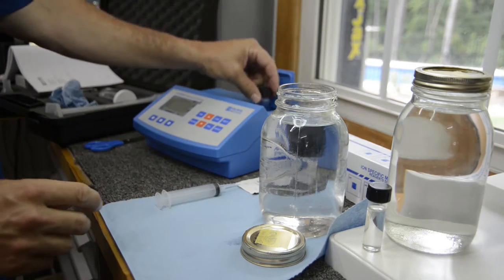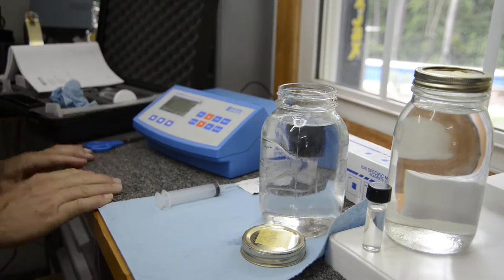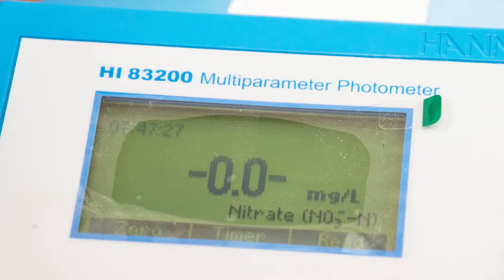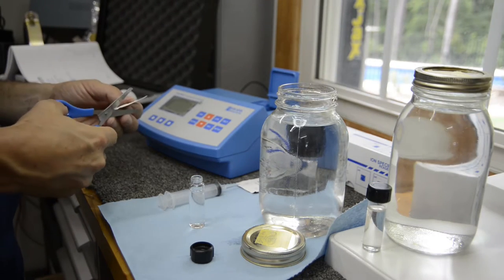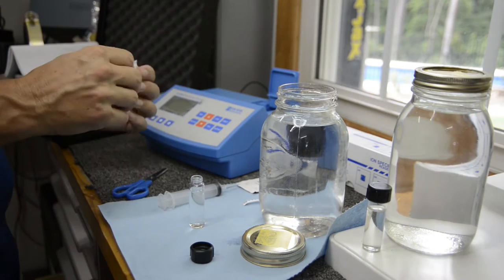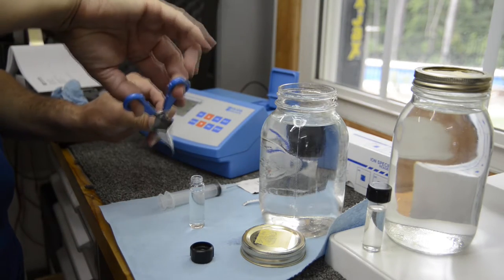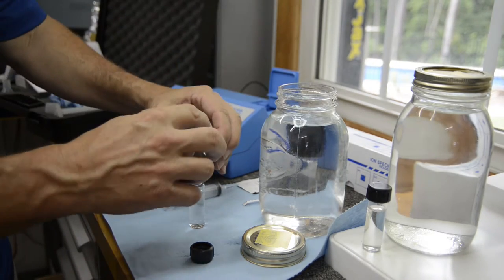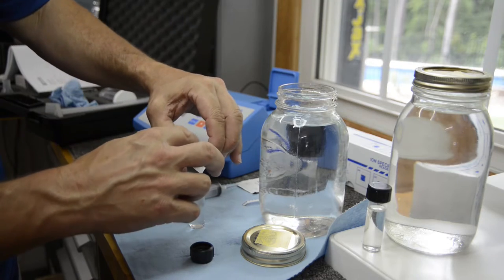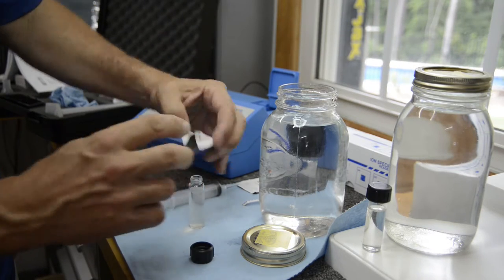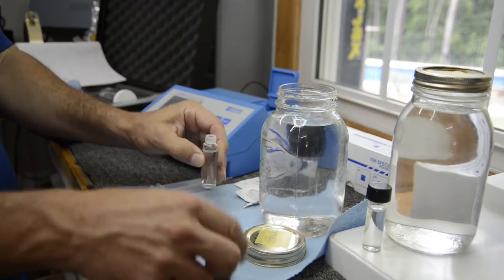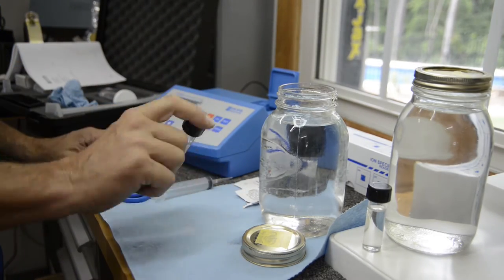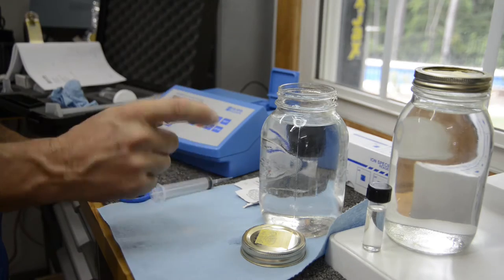We are going to speed this up. This is now the bubbled water, and we're going to zero our meter with the bubbled water. We'll add the reagent and make sure that we get it all in there. Put the lid on, rock it back and forth - about 10 times is usually sufficient.